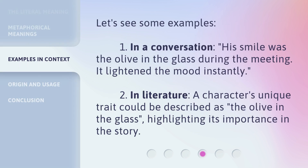Let's see some examples. First, in a conversation: "His smile was the olive in the glass during the meeting — it lightened the mood instantly." Second, in literature, a character's unique trait could be described as the olive in the glass, highlighting its importance in the story.